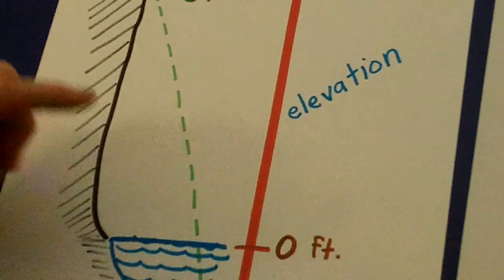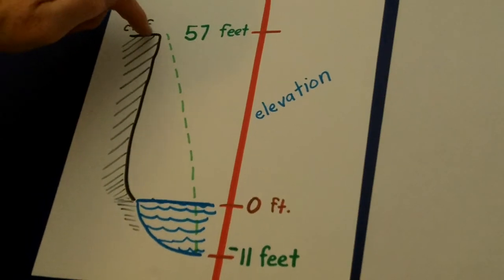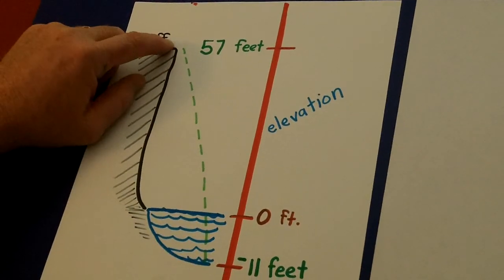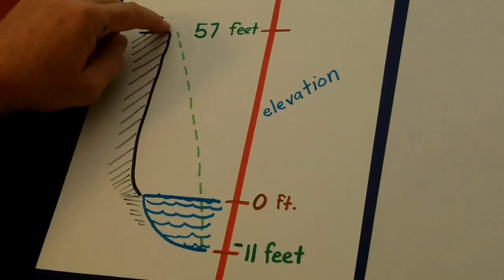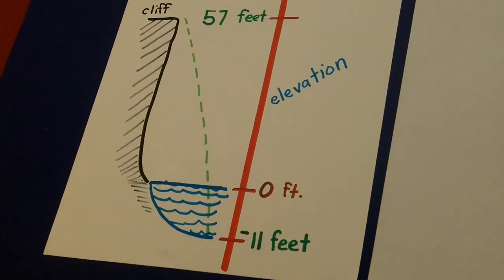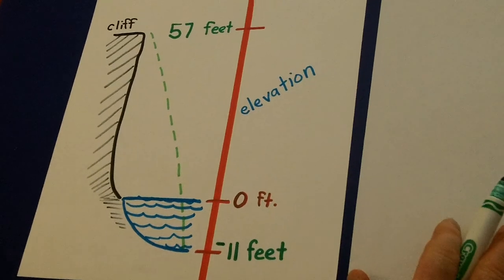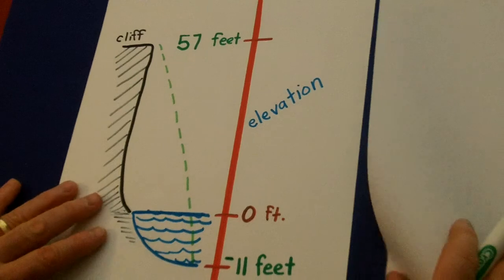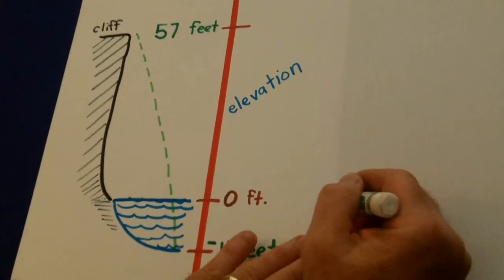Here's another elevation problem. Usually they say some golfer's on a cliff over the ocean. Yeah, like this is real realistic. He's going to hit a golf ball off the cliff into the ocean. So this guy hits a golf ball off the cliff. It goes into the ocean. This is real simple.